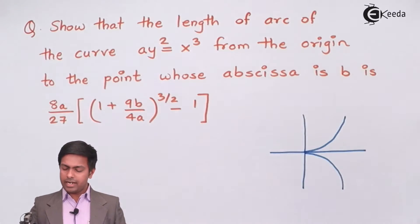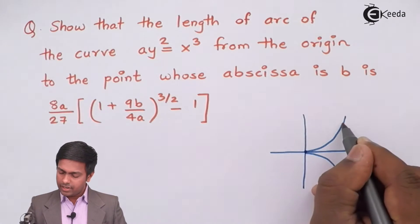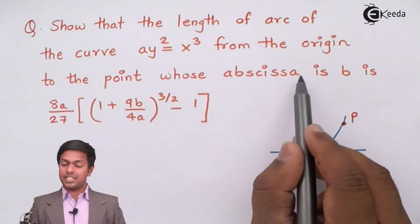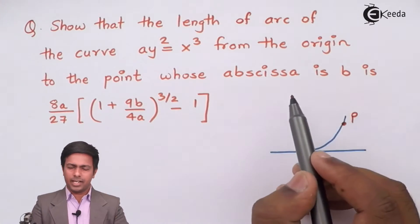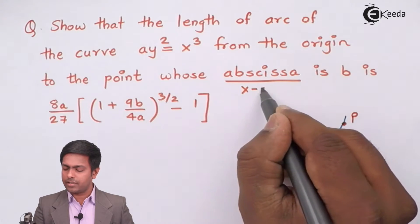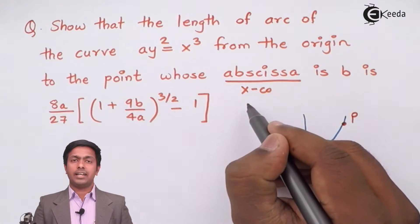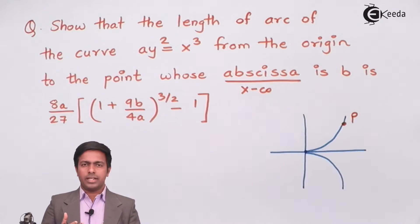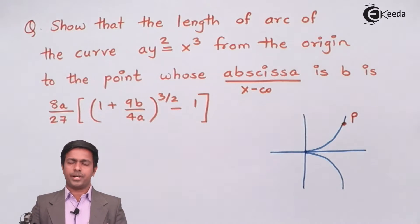So I have to find out that length from the origin to the point. So let's say there is some point, here I have one point which is p whose abscissa is b. Now let me tell you that abscissa is nothing but x coordinate and the y coordinate is called ordinate. So these are the words which we use in geometry.